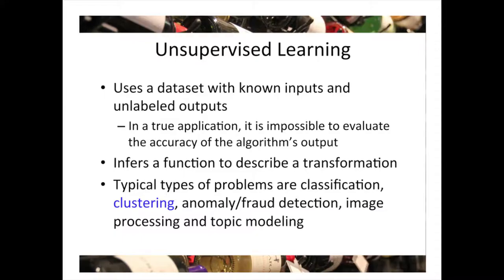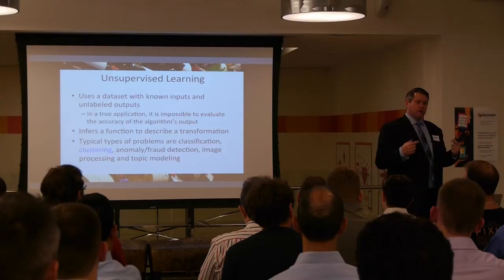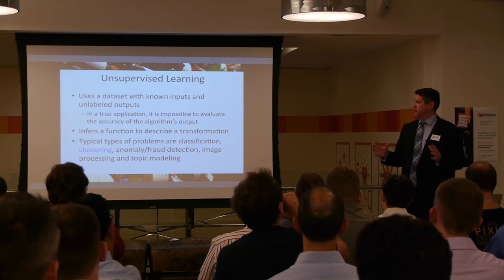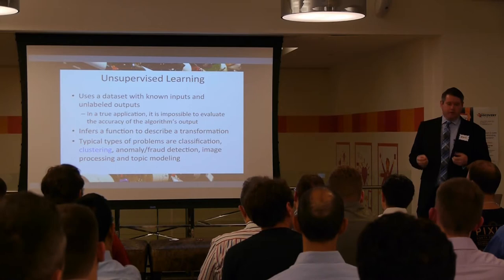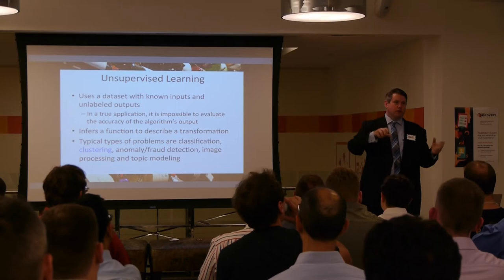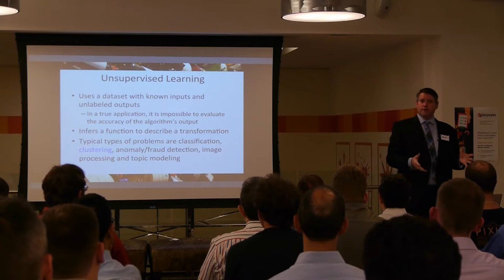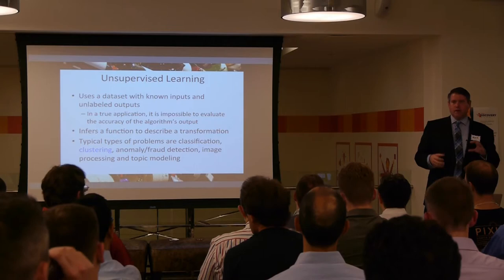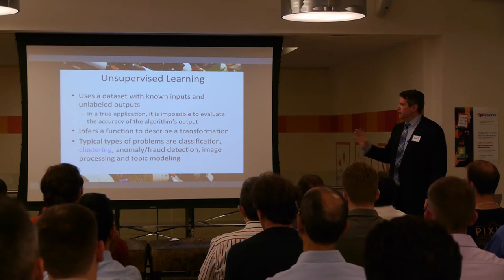Unsupervised learning uses a dataset of known inputs but unlabeled outputs. Technically, in a true application, it's really not possible to know whether your algorithm is doing the right thing because there is no correct output. These are very useful for things like determining what topics are trending in the news — before hooking it up to the world, you don't know how many topics there are, so you have to trust the algorithm. It infers a function from the data and produces a transformation — typical problems include classification, clustering, fraud detection.